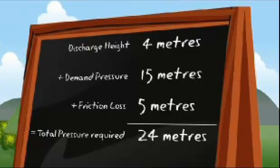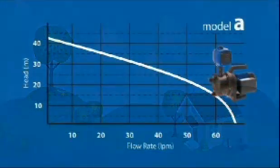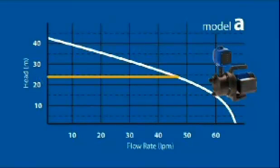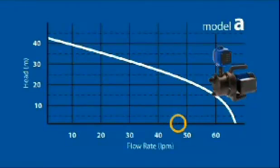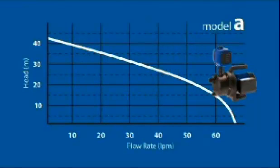Let's go back to the pump curve for model A to see if changing the diameter of the pipe will make this model a viable option once more. This time, we need to find 24 metres on the head or vertical axis and run an imaginary line across the graph till you hit the pump curve. Draw a straight line from this point down to the horizontal axis. By increasing the diameter size of the pipe, model A can now produce both the pressure and flow rate to meet Aunty Flo's needs.